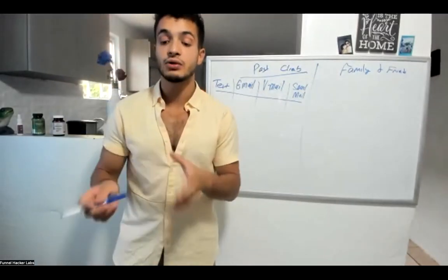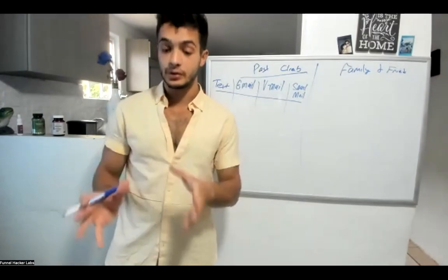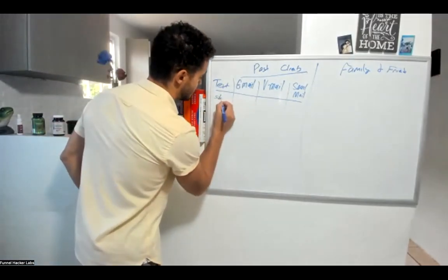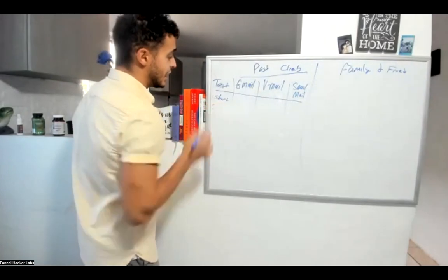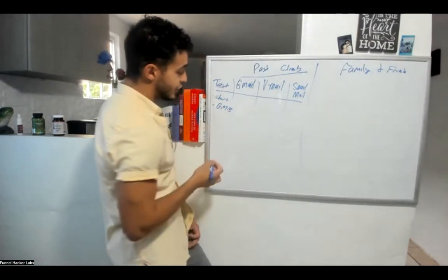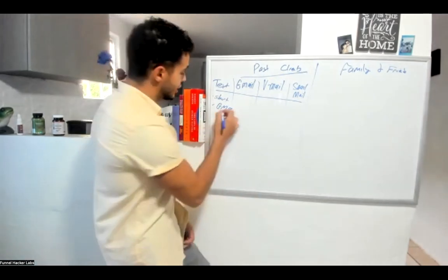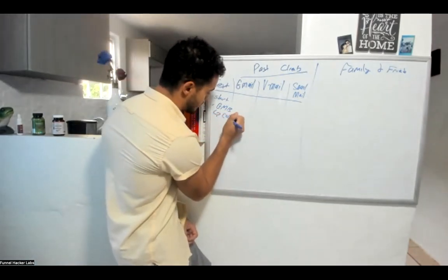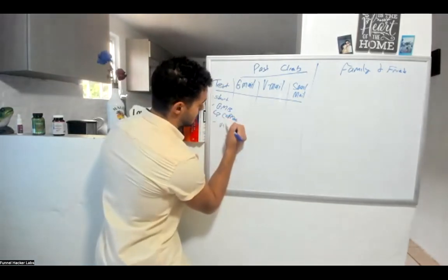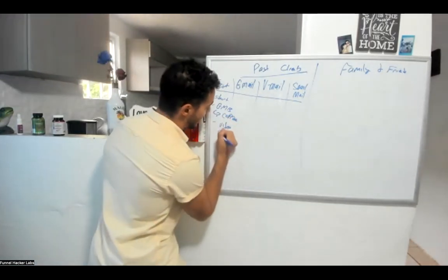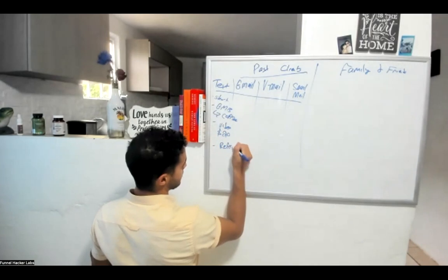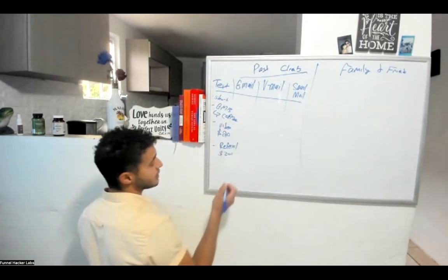The target is to get reviews, testimonials, and referrals. Text should be very short. The offer structure: if they leave a Google My Business review, buy them a free coffee. If they leave a video testimonial, send them $20. If they send a referral, give them around $200.